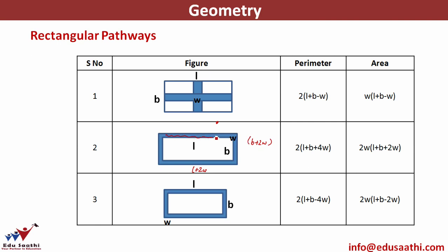To find the area of the shaded region, look at the area of outer minus the area of inner. For the outer, it will be (L + 2W) × (B + 2W) minus L × B. For the inner pathway case, outer is L × B and inner is (L − 2W) × (B − 2W). For the perimeter, you add 2L + 2B plus the inner perimeter terms. Using concept is much more beneficial than remembering formulas.